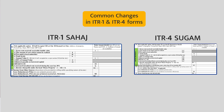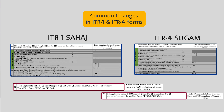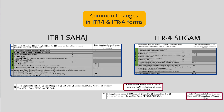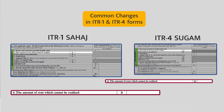For house property income — let-out property — you now have to indicate the name of the lessee. This is basically to catch those who claim fake HRA exemptions. For let-out property, if there is a PAN number of the tenant, it is mandatory to provide it. And if rent is unrealized for any reason, you will indicate the details in the ITR form.